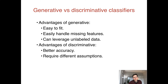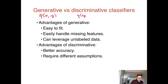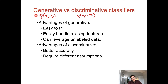More generally, we can divide classification algorithms into two categories. Generative algorithms, where we're modeling or optimizing probability of x comma y, and discriminative classifiers, where we're optimizing probability of y given x. We saw one example of each: in the generative case, Naive Bayes and Gaussian discriminant analysis; in the discriminative case, logistic regression.